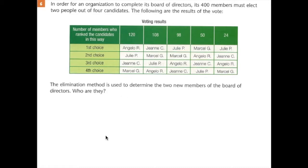The elimination method is we look at the number of first choices that we have. So we have Angelo, Julia, Joanne, and Marcel.